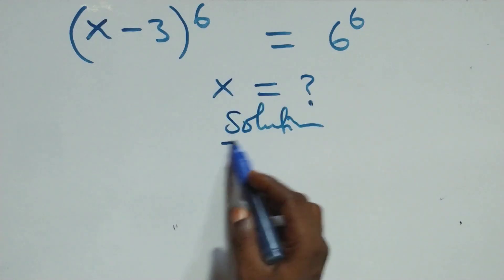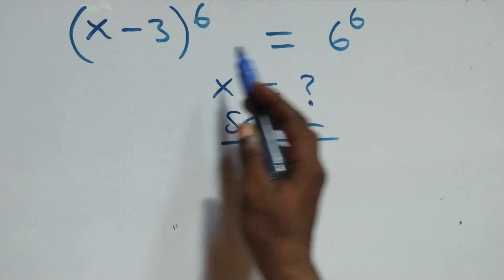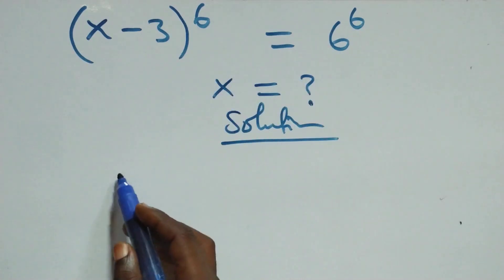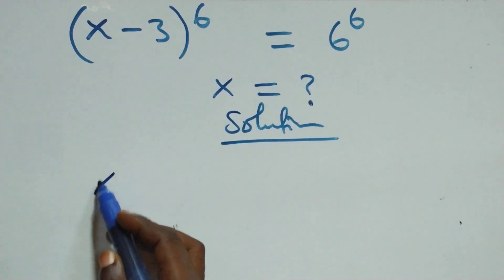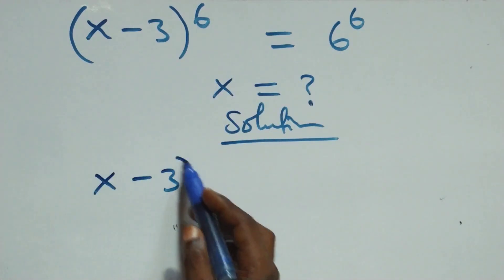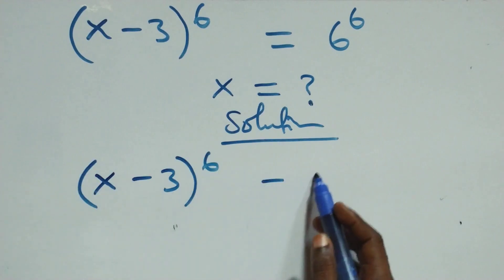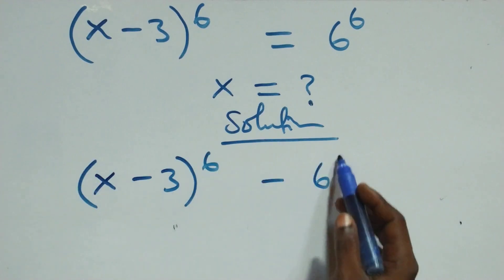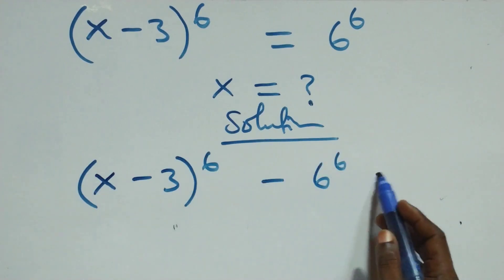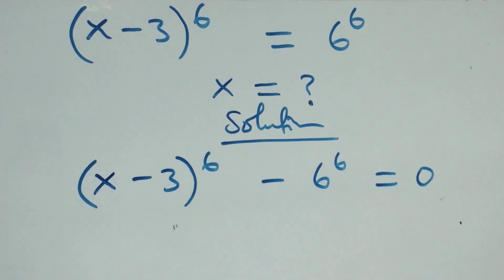What we have here: we can take 6 raised to the power 6 to the left hand side, and we have (x minus 3) raised to the power 6, then minus 6 raised to the power 6, equals to 0.